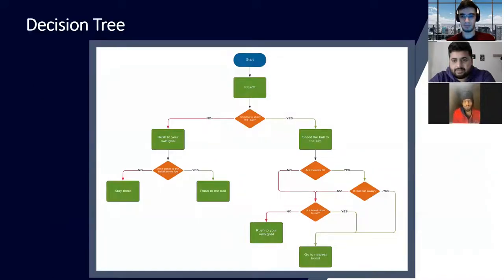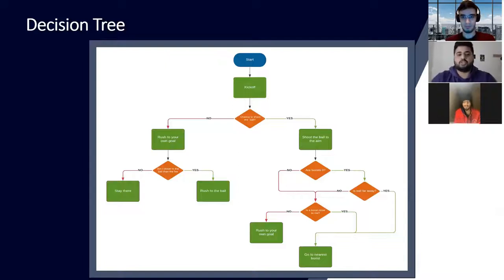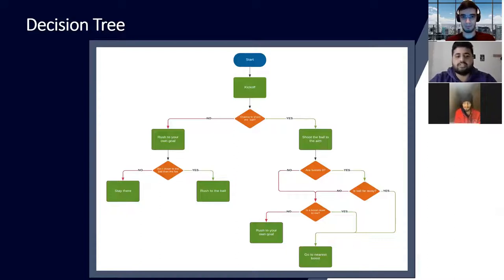My colleague Temu will follow up on that. Hi guys, so I will be trying to explain the decision tree of this bot. Initially, the purpose of the decision tree is to define functions and put conditions for which are true and which are false, and using those conditions, bring the results out. As you can see from the screen, for example, there is a kickoff and then we have the option of whether we have a chance to shoot the ball — yes or no — then what direction it aims on and how to take the boost.